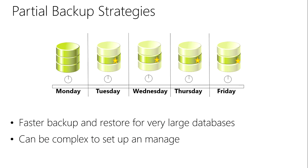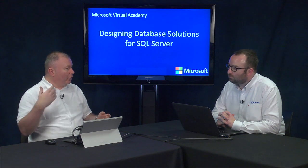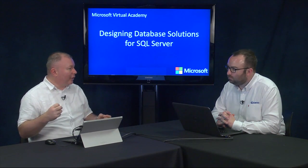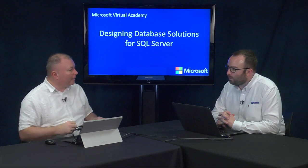Partial backup strategies are for much larger databases with multiple file groups — typically a combination of read-only and read-write file groups. The idea is that you only back up the file groups with changed data. You're backing up smaller data sets rather than the entire massive database — just the subsets of data that are changing. A good example is a data warehouse, where most of the data is static historical data, but newer records in fact tables are being added to one specific file group — and that's the one you back up.